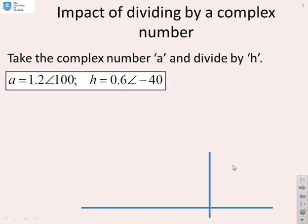Another example then. Take the complex number a and divide it by h. So here's a is 1.2 arg 110. Let's mark that somewhere around here, 1.2 arg 110. There's 110 degrees.